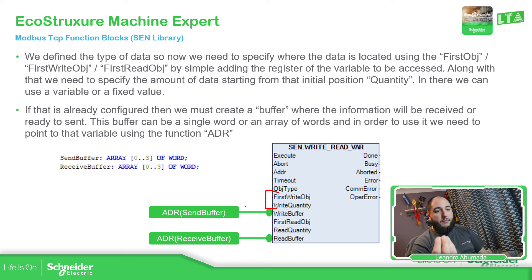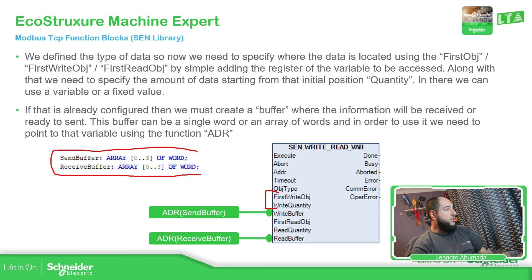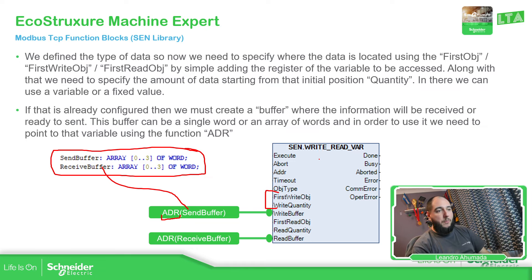Then what we need is the buffer, which is going to hold the information ready for this function block to read and write on the other side. For that, we just need to create an array or use just a word, and then we just need to use the function ADR with the array in parentheses. The system will read the information and write over here — I'm going to show you that in an example.